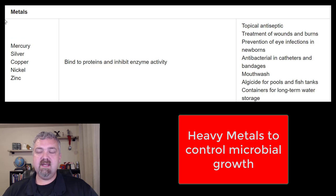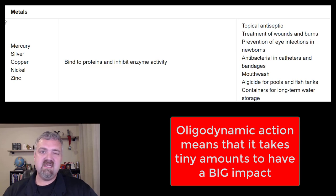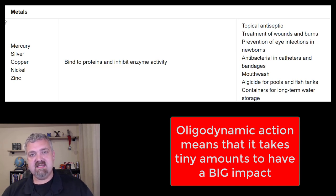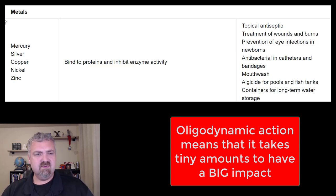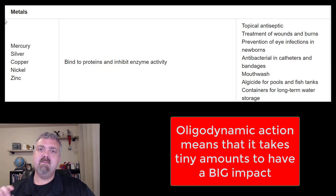So how they actually work — first of all, you're going to see a term often used that says they have an oligodynamic action. Oligo basically means a few or several. So what that means is a very small amount of heavy metals can have an antimicrobial activity. Oligodynamic activity just tells you it takes only a little tiny bit of these metals to accumulate in microbial cells and end up killing them.